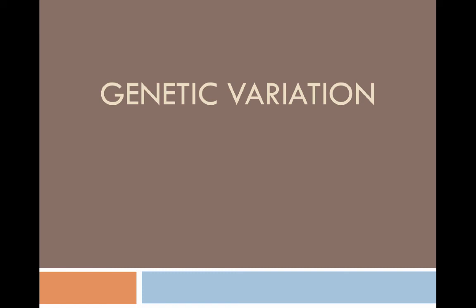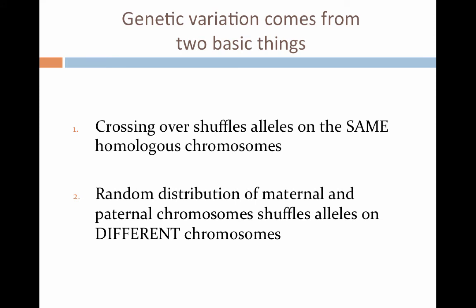Both mitosis and meiosis have a couple of different methods of creating genetic variation — this is why your genetic makeup is different from your siblings'. The first source of genetic variation is crossing over, the exchanging of genetic material on chromosomes, which can take place during mitosis and meiosis. This is a shuffling of alleles on chromosomes, moving from one chromosome pair to the next — the chromosomes are still homologous, but each end is exchanging alleles.